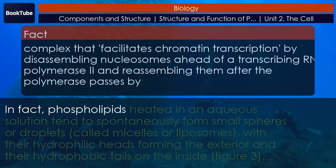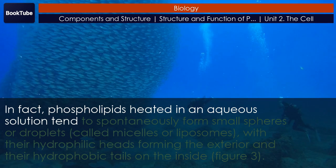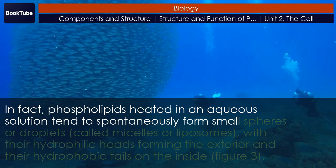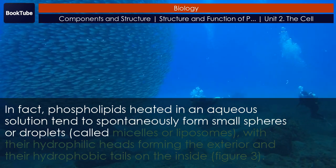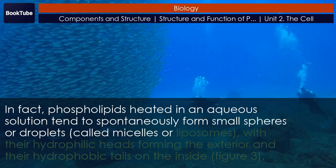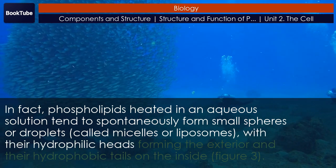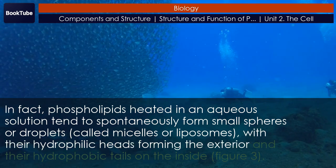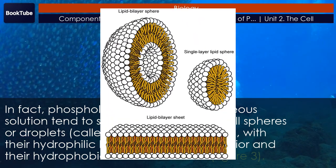A molecule with this arrangement of a positively or negatively charged area and an uncharged or non-polar area is referred to as amphiphilic or dual-loving. This characteristic is vital to the structure of a plasma membrane because in water, phospholipids tend to become arranged with their hydrophobic tails facing each other and their hydrophilic heads facing out, forming a lipid bilayer—a barrier composed of a double layer of phospholipids. Phospholipids heated in an aqueous solution tend to spontaneously form small spheres or droplets called micelles or liposomes, with their hydrophilic heads forming the exterior and their hydrophobic tails on the inside.